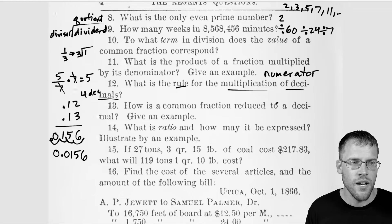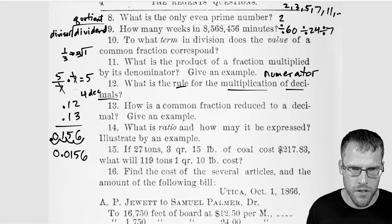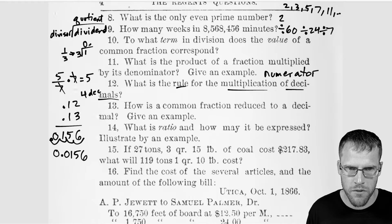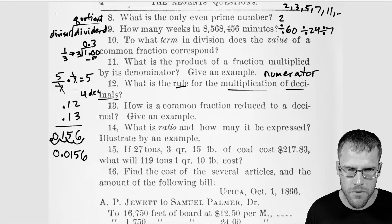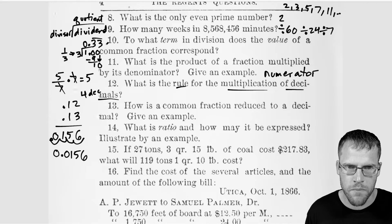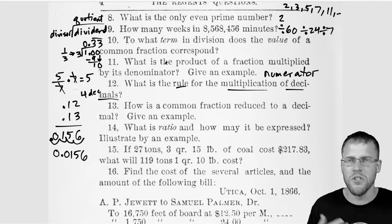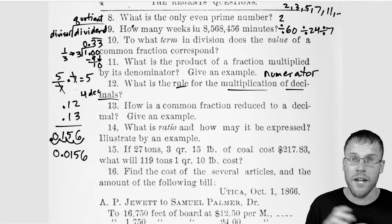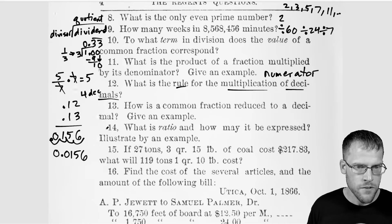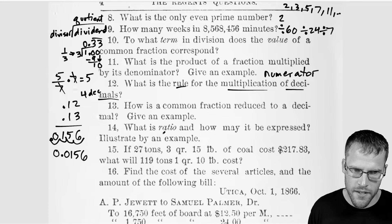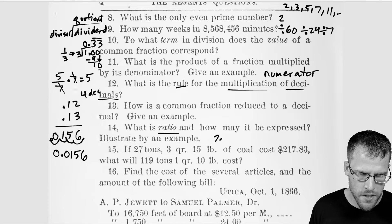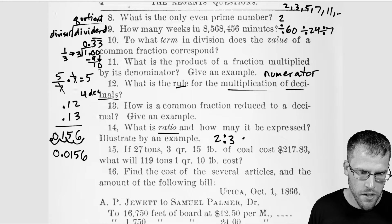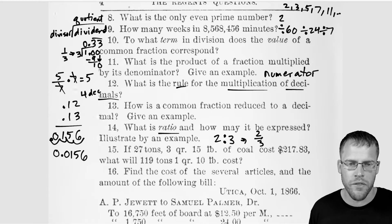How is a common fraction reduced to a decimal? So just know the process. If we were to continue on this example, 3 goes into 1, 0 times. And then you carry your decimal and just add a bunch of 0s. 3 goes into 10, 3 times. And 3 times 3 is 9. You have a remainder of 1. Bring down the 0. 3 goes into 10, 3 times. This process will continue. So just know the process for dividing and turning a fraction into a decimal using long division. So let's see. Next up here, what is ratio and how may it be expressed? A ratio is a comparison of two numbers by division. You could express it a few ways. You could say the ratio 2 to 3 here could be expressed this way, or it could be expressed as 2 over 3 as a fraction.